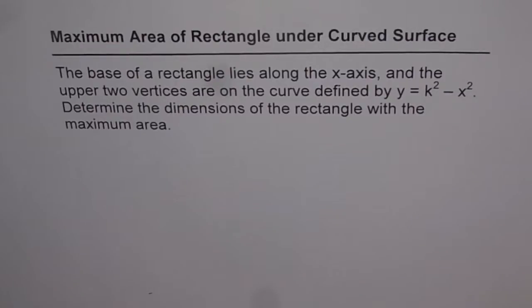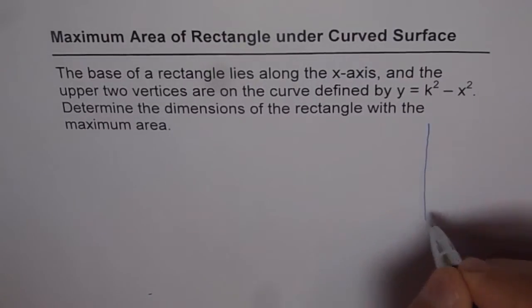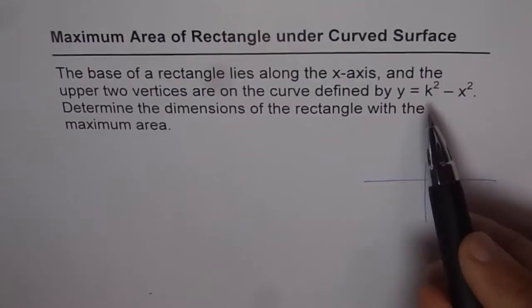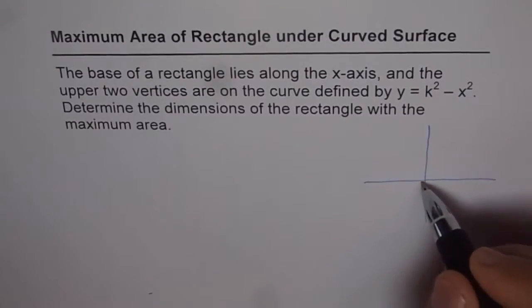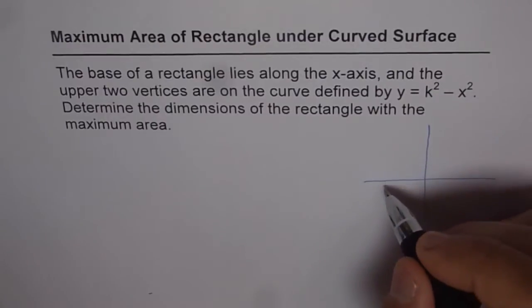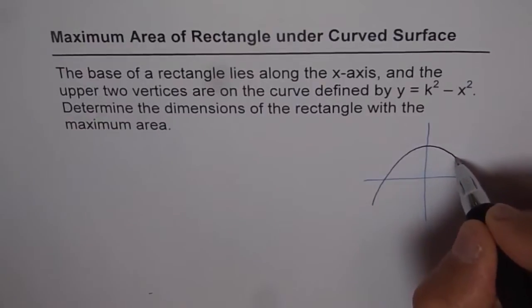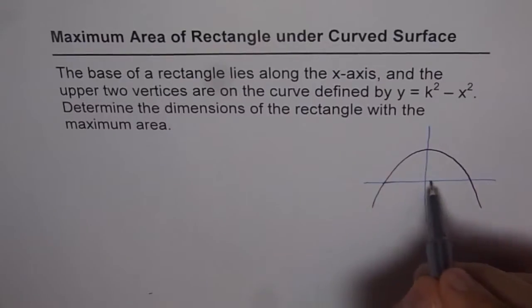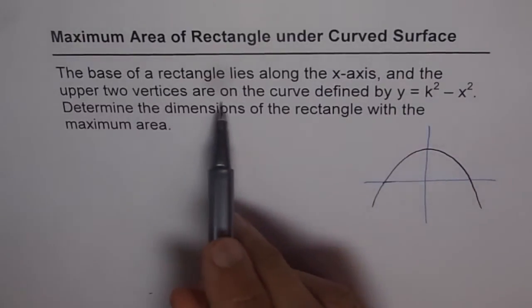This is a case where the rectangle is within a curved surface. Let's sketch this and understand the situation. The equation given is that of a parabola: y = k squared minus x squared. That means x squared is inverted and moved k squared units up. So we have a parabola opening downward. The base of the rectangle lies along the x-axis and the upper two vertices are on the curve.